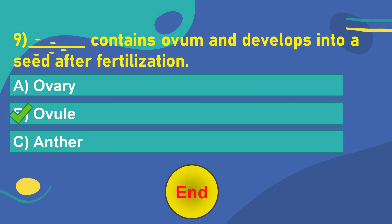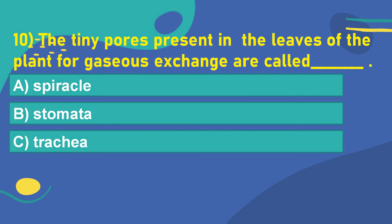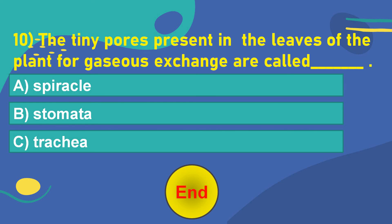Let's move on to the next question. The tenth question is: The tiny pores present in the leaves of the plant for gaseous exchange are called dash. Option A: Spherical. Option B: Stomata. Option C: Trachea. Think of the answer. Your time starts now. 5, 4, 3, 2, 1, 0. OK. The correct answer is Option B: Stomata.